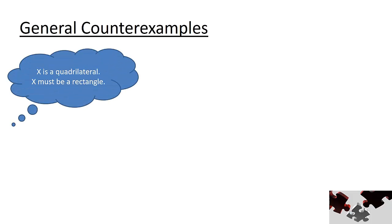Our first claim that we're going to try to find a counterexample for is the following: X is a quadrilateral, X must be a rectangle. Well first, it might be helpful to know what a quadrilateral is. In case you're unsure, a quadrilateral is any two-dimensional shape that has four sides. In this case, four-sided shapes or quadrilaterals is the set that we're working with, and rectangle is the particular property that we're interested in. What we need to do is find a four-sided shape that is not a rectangle. That would be our counterexample.